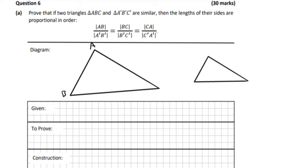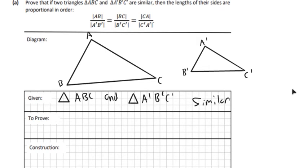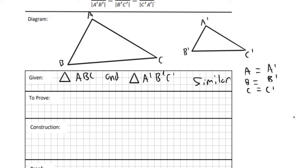So you're given two triangles and they're similar to each other — we'll call them ABC and A'B'C'. Similar means that the angles are the same, it's just that the sides are different. So A has to equal A', B has to equal B', and C has to equal C'. That's the way it has to be for similar triangles.